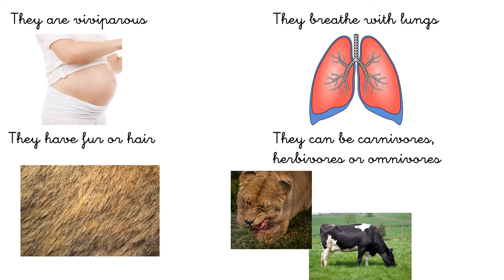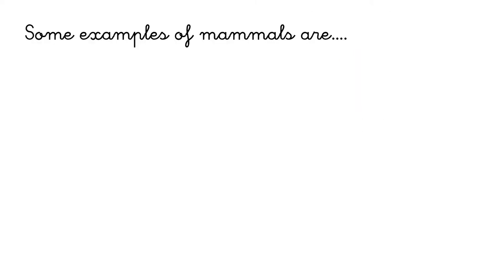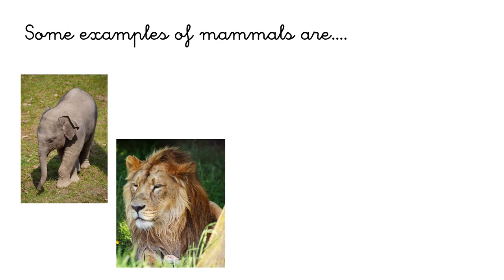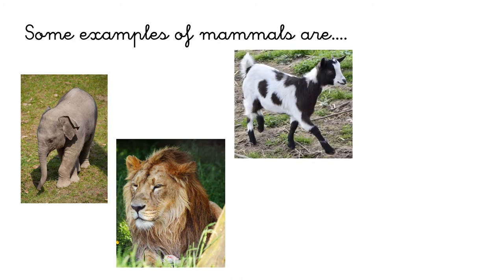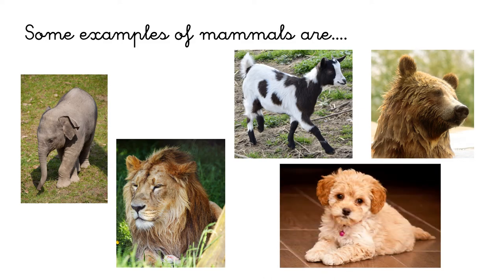herbivores if they eat plants, or omnivores if they eat animals and plants. Some examples of mammals are the elephant, the lion, the goat, the bear, and the dog.